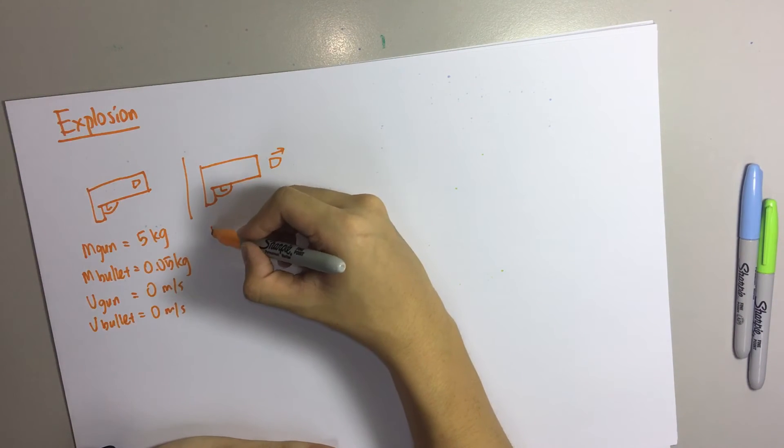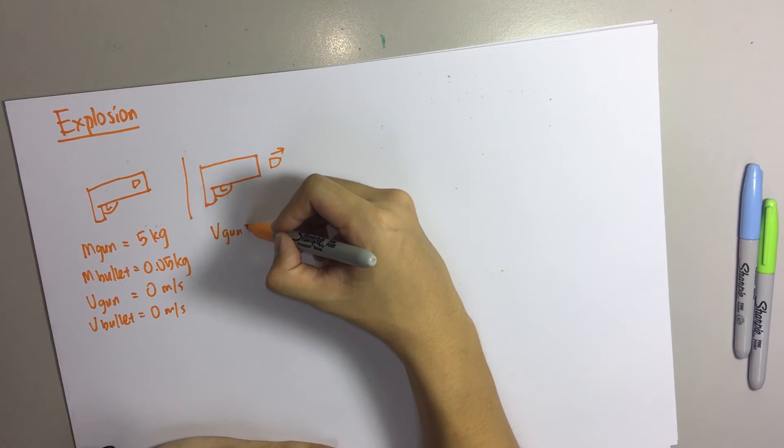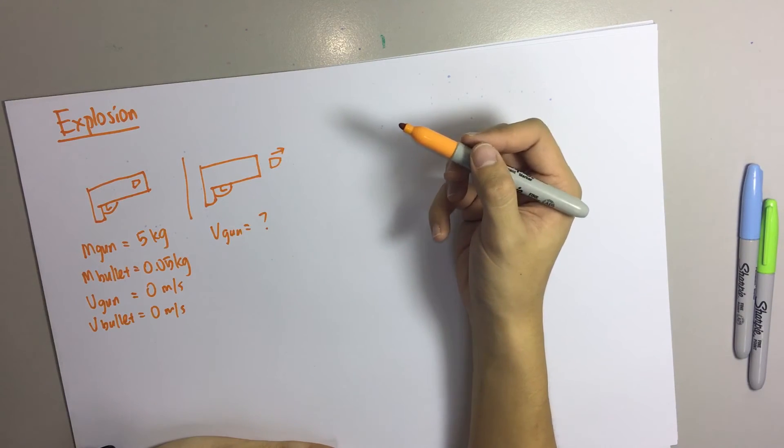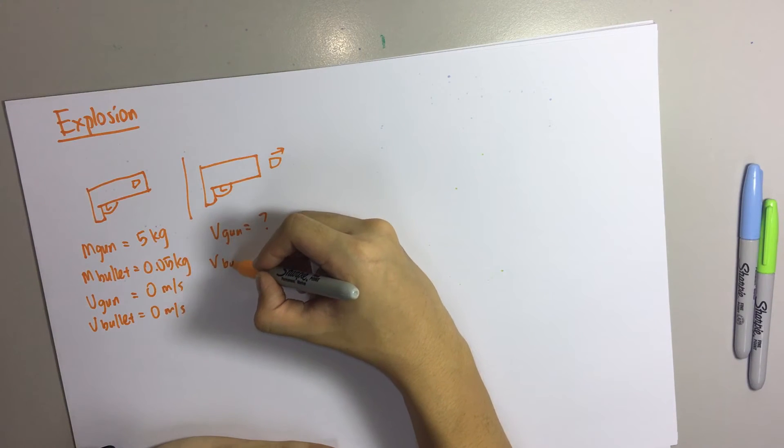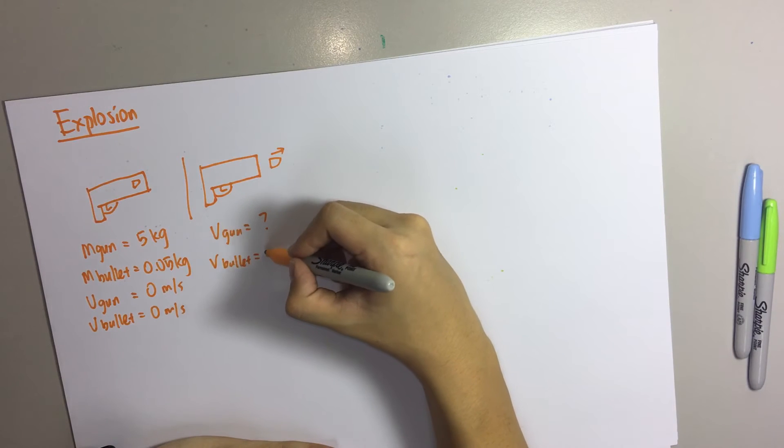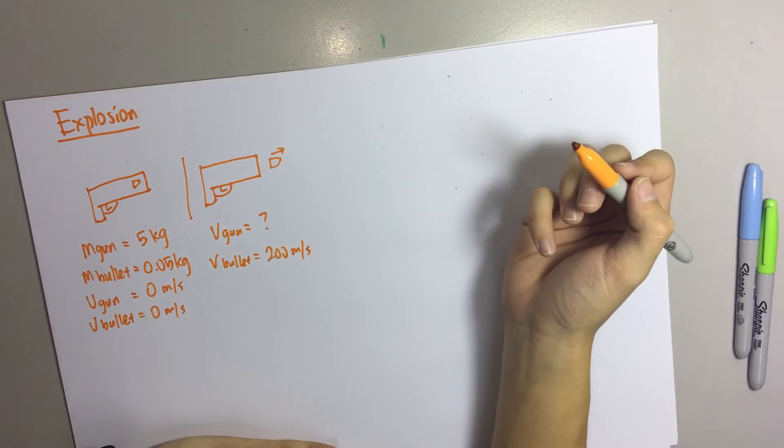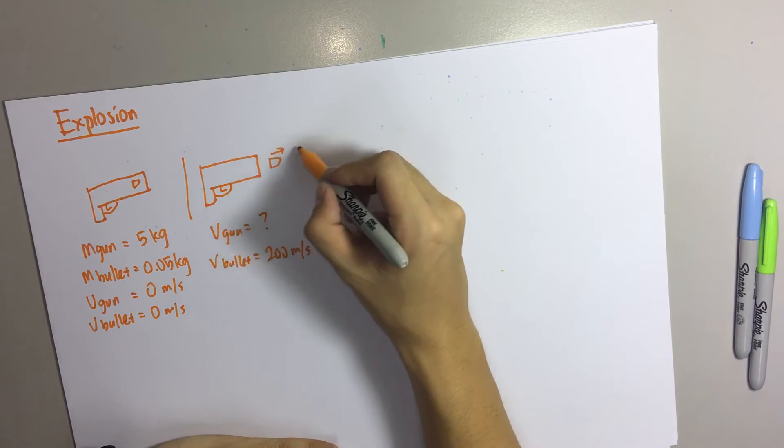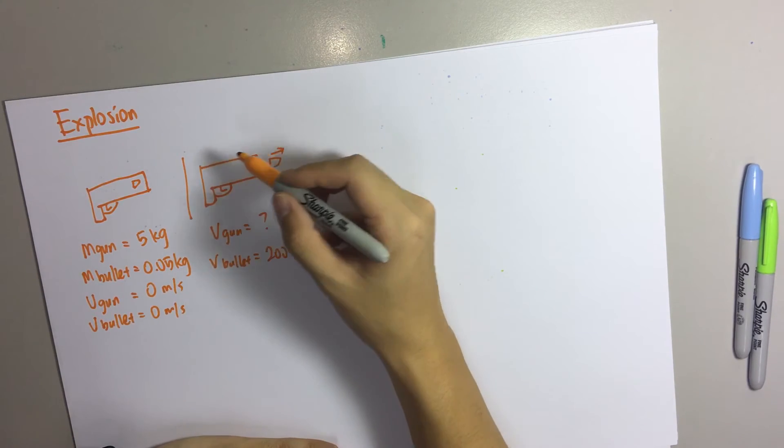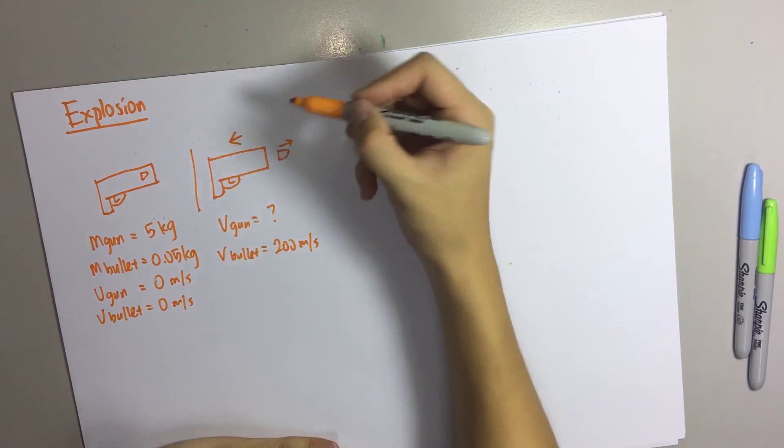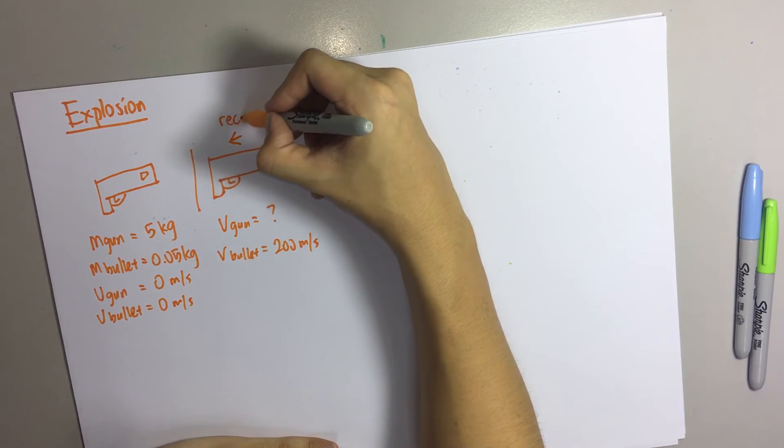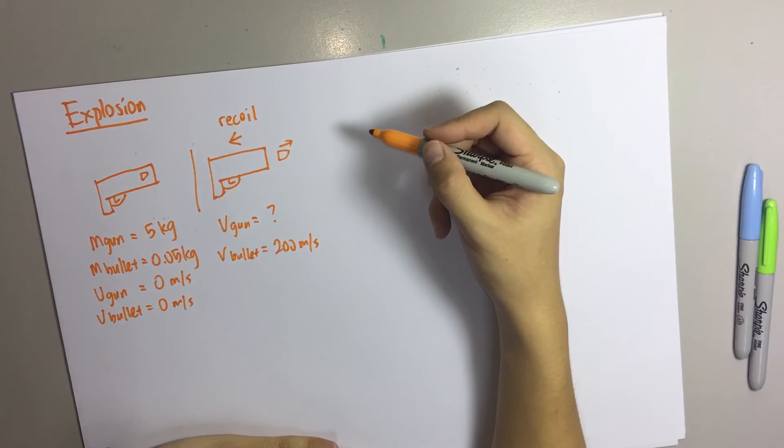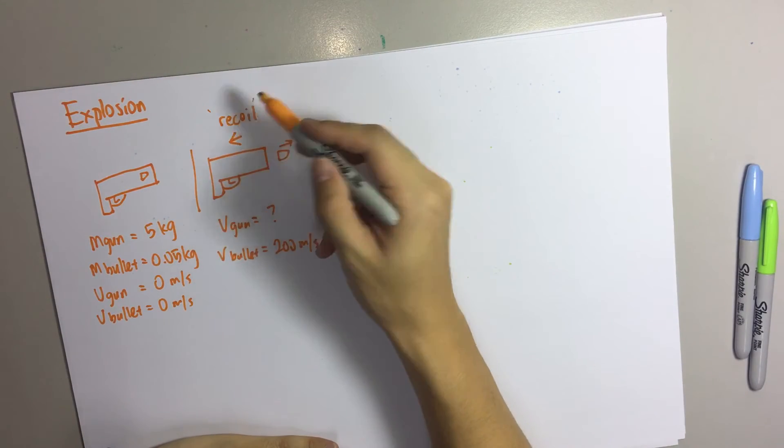After that, your V for your gun is the one they want to find, but your bullet is moving at 200 meters per second. This is moving to the right. And this gun will actually be moving to the left because every gun, when a bullet is shooting out from the gun, you will recoil.